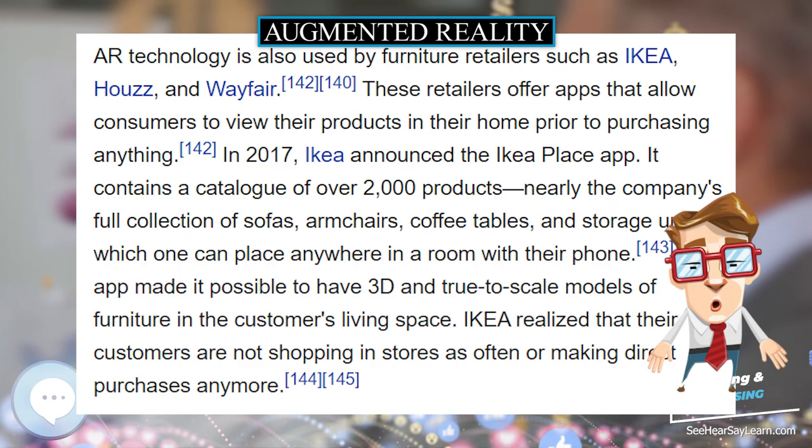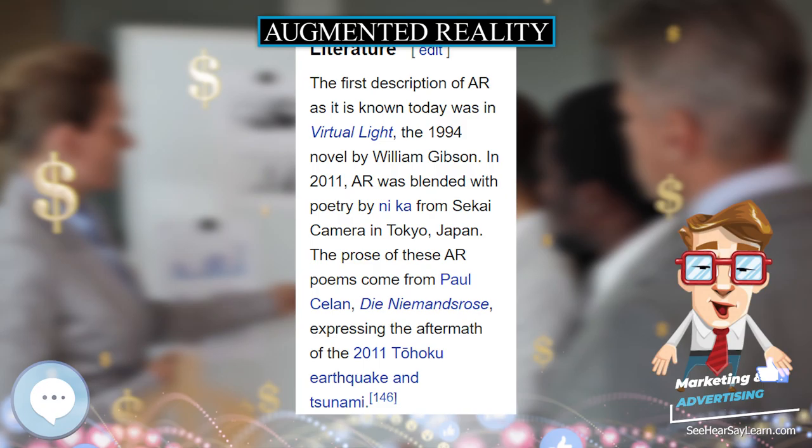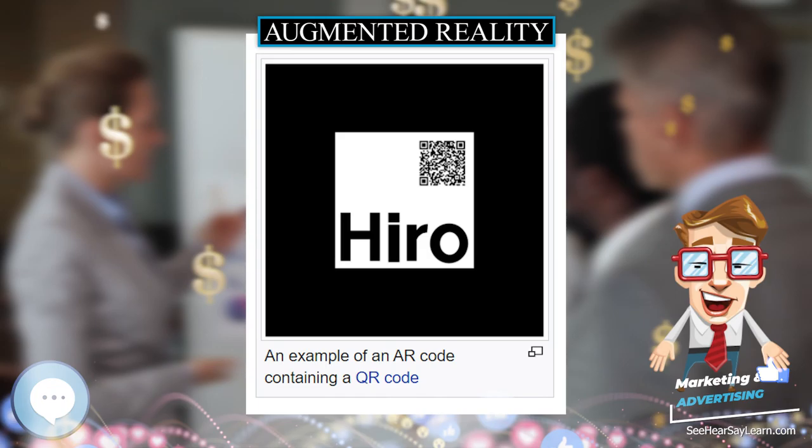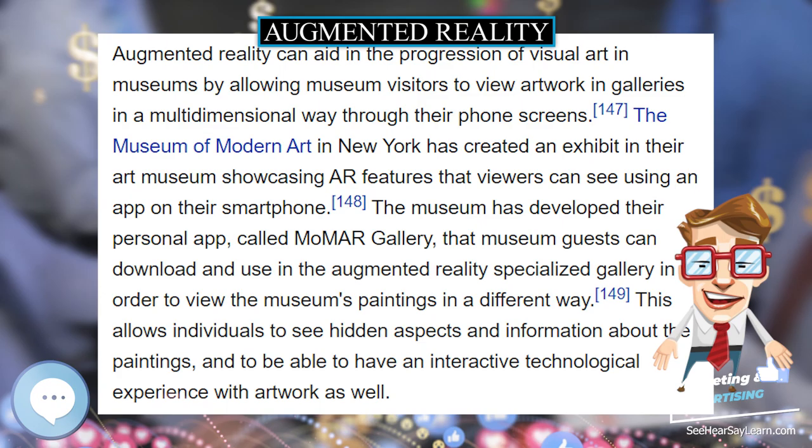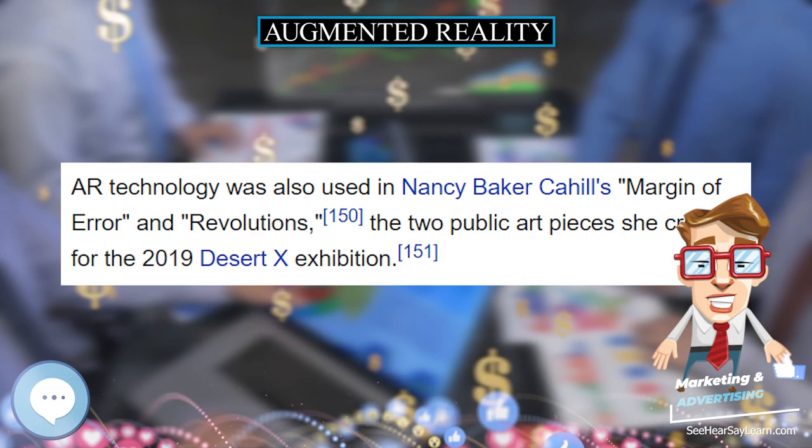Contact lenses that display AR imaging are in development. These bionic contact lenses might contain the elements for display embedded into the lens, including integrated circuitry, LEDs, and an antenna for wireless communication. The first contact lens display was patented in 1999 by Steve Mann and was intended to work in combination with AR spectacles, but the project was abandoned, then revived 11 years later in 2010–2011.